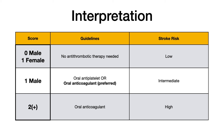A score of one in a male — meaning one additional stroke risk factor — is intermediate risk. Historically, either an oral antiplatelet agent or an oral anticoagulant was acceptable, but as guidelines have evolved, the preferred treatment is now an oral anticoagulant, thanks to novel oral anticoagulants that are considerably safer than warfarin alone. For males or females with two or more points, that is high risk of stroke, and an oral anticoagulant is required.